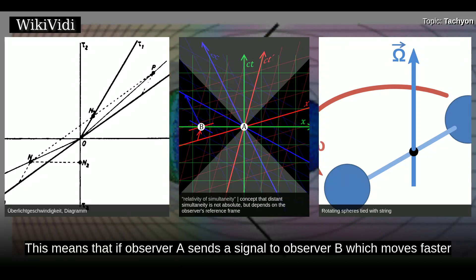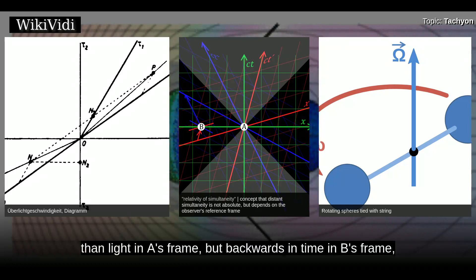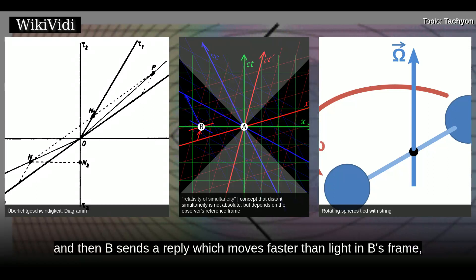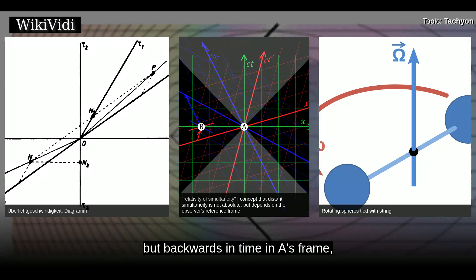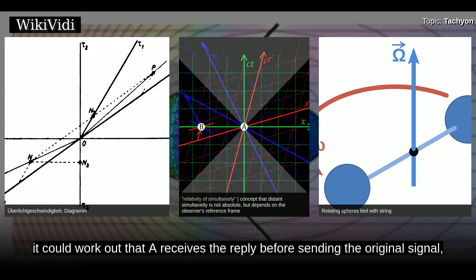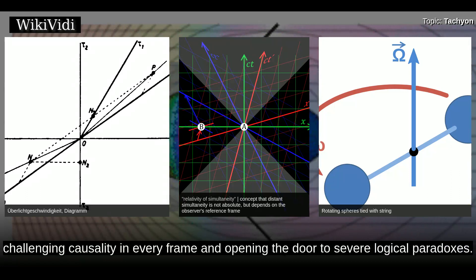This means that if observer A sends a signal to observer B which moves faster than light in A's frame but backwards in time in B's frame, and then B sends a reply which moves faster than light in B's frame but backwards in time in A's frame, it could work out that A receives the reply before sending the original signal, challenging causality in every frame and opening the door to severe logical paradoxes.